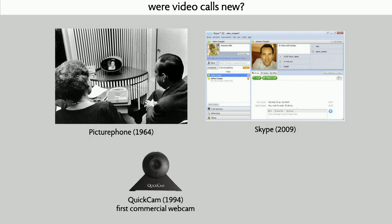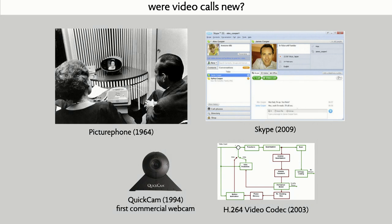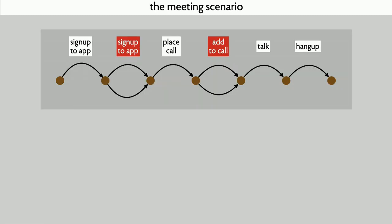There were also webcams — they've been around since 1994 and were already cheap devices. And you might say shipping video over the Internet had performance problems, but the H.264 video codec was finalized in 2003. So again, the story was that these things just weren't convenient to use. If you wanted to use Skype, you as the user had to sign up for the app, and then the person you were talking to had to sign up as well.